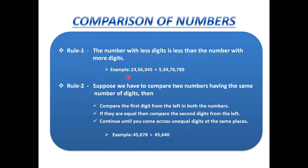On the left side you have a seven-digit number and on the right side an eight-digit number. According to Rule 1, the eight-digit number is greater than the seven-digit number.